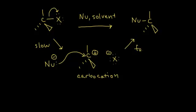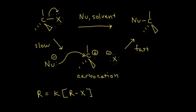I have a slow step and a fast step. When rate studies are done on SN1 reactions, the overall rate law is dependent only upon the concentration of our alkyl halide. So if you're writing a general chemistry rate law, R — the overall rate of the reaction — is equal to the rate constant K times the concentration of your alkyl halide only. The rate is only dependent upon the concentration of your alkyl halide.